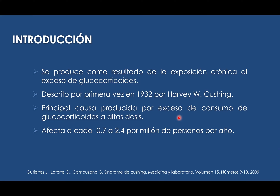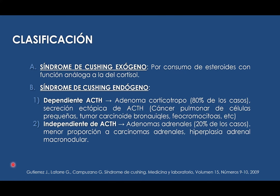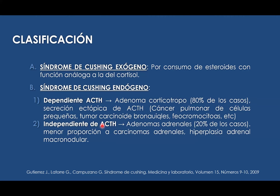La producción principal del síndrome de Cushing es por el exceso de glucocorticoides, con una afectación de 0.7 a 2.4 personas por millón al año aproximadamente. Dentro de la clasificación tenemos el síndrome de Cushing exógeno, es decir el consumo excesivo de esteroides vía oral o intramuscular, y el endógeno, que puede estar dado por dependencia de ACTH o independencia del ACTH. La mayoría de pacientes diagnosticados con síndrome de Cushing endógeno — el 80% — es dependiente de ACTH y solo el 20% es independiente de ACTH.